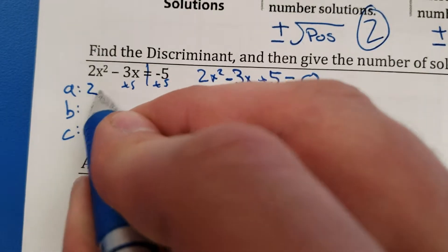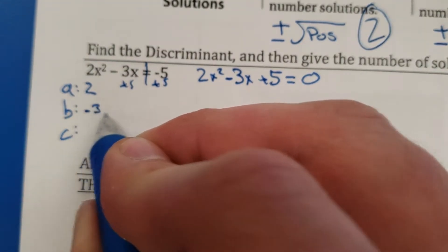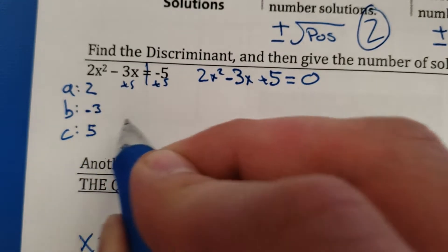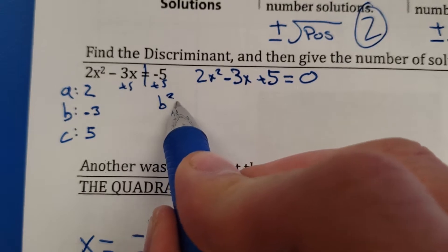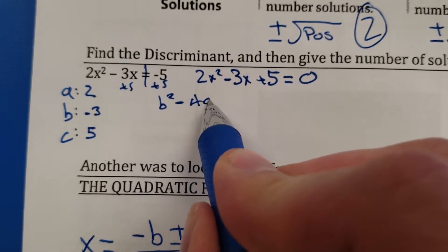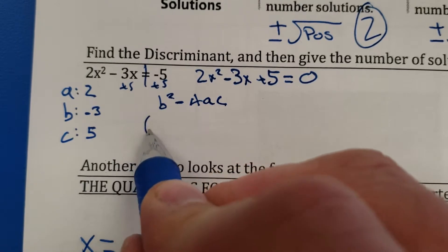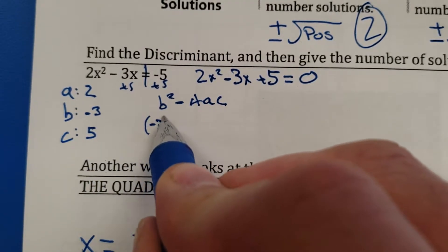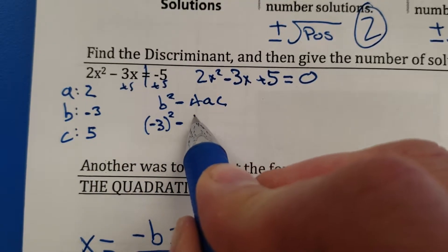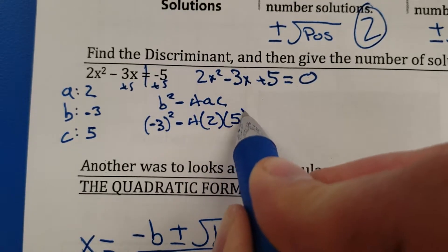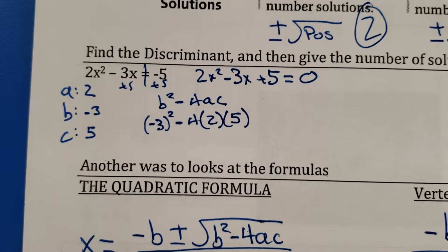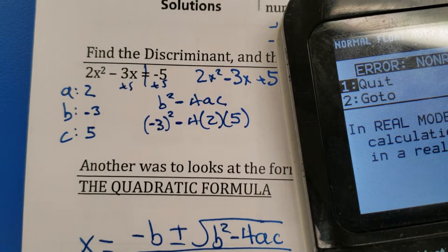Okay, the a value is 2, b value is negative 3, and then the c value is 5. So right away I'm going to do the discriminant. So I'm going to do b squared minus 4 times a times c. So here we go, negative 3 squared minus 4 times a times c. That's it. Write it out. It doesn't take very long whatsoever.